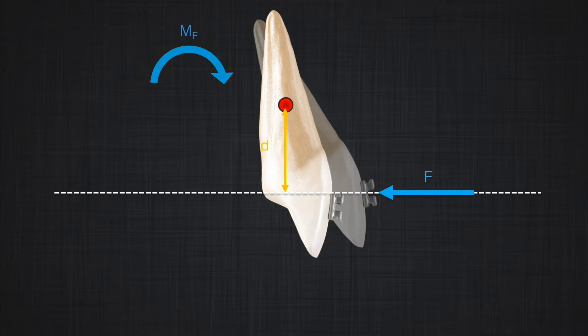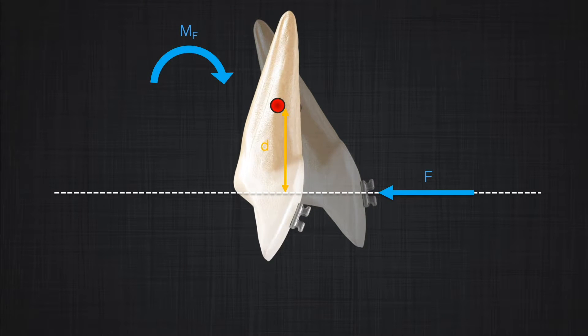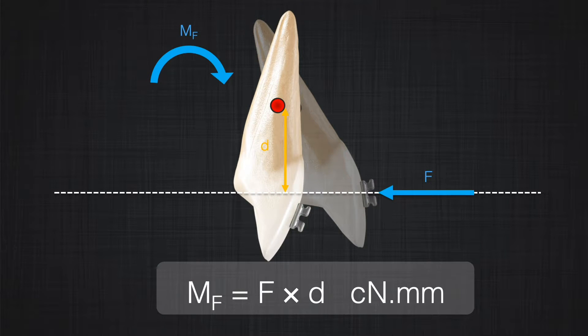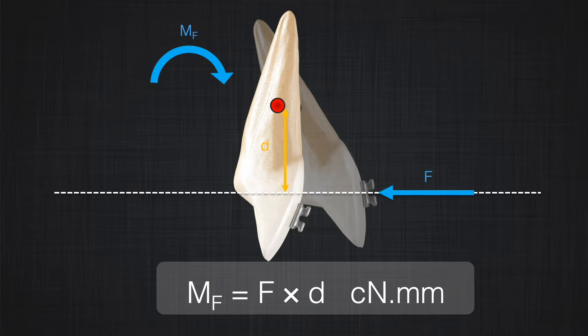Can you guess what would be the unit of this moment? As you can see, the unit of the moment should have the magnitude of the force — the unit of the force, which is centinewton or gram force — and the unit of the distance, which in this case would be millimeter.